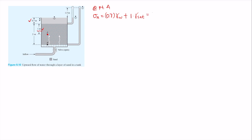Plugging in the values: 0.7 times 9.81 (unit weight of water in SI) plus 1 times 20.95 (the unit weight of sand we calculated) gives a total stress at point A of 27.46 kilonewtons per meter squared.